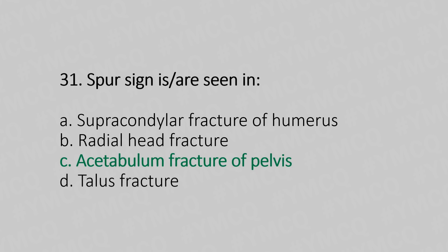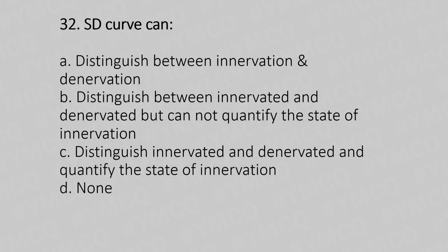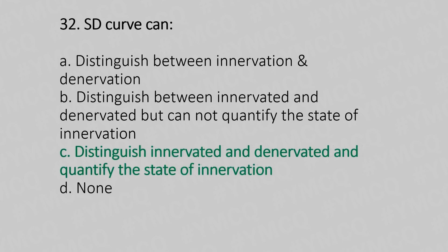Now let's move to question number 32. The SD curve can: Option A: distinguish between innervated and denervated. Option B: distinguish between innervated and denervated but cannot quantify the state of innervation. Option C: distinguish innervated and denervated and quantify the state of innervation. Option D: none. And the answer is Option C — distinguish innervated and denervated and quantify the state of innervation.